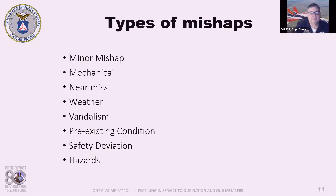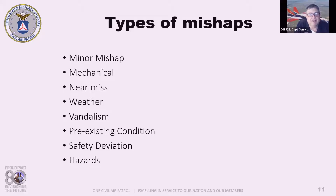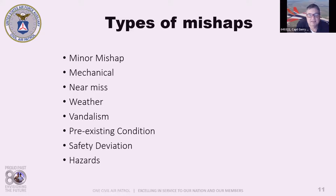A weather mishap is any mishap attributed to unforeseen weather events — for example, hail, high winds, or flooding. Up here in the UP, we get weather mishaps all the time. Between noon and 2 PM in May you could experience all four seasons in that two-hour period. Vandalism is any event that results from acts of malice — generally considered a crime — towards CAP property where a police report is filed.